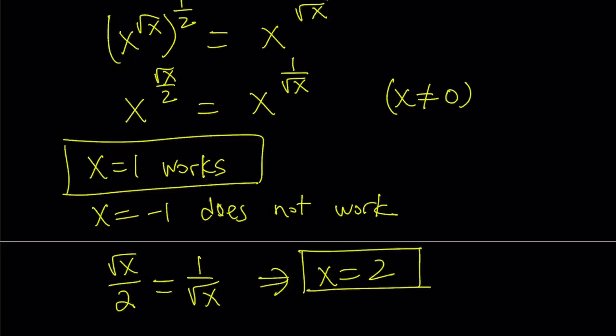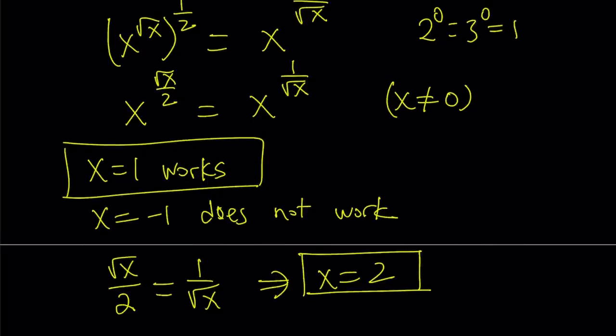There aren't. Because if you think about it, sometimes the exponents can be 0 and the bases don't matter. For example, you have 2 to the power of 0 equals 3 to the power of 0, because they're both equal to 1. But in this case, the exponents cannot equal 0.